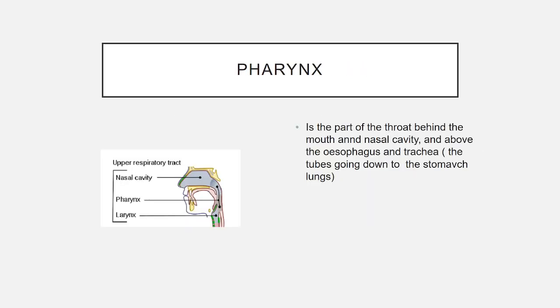The pharynx is the part of the throat behind the mouth and nasal cavity, and above the esophagus and trachea — the tube going down to the stomach.